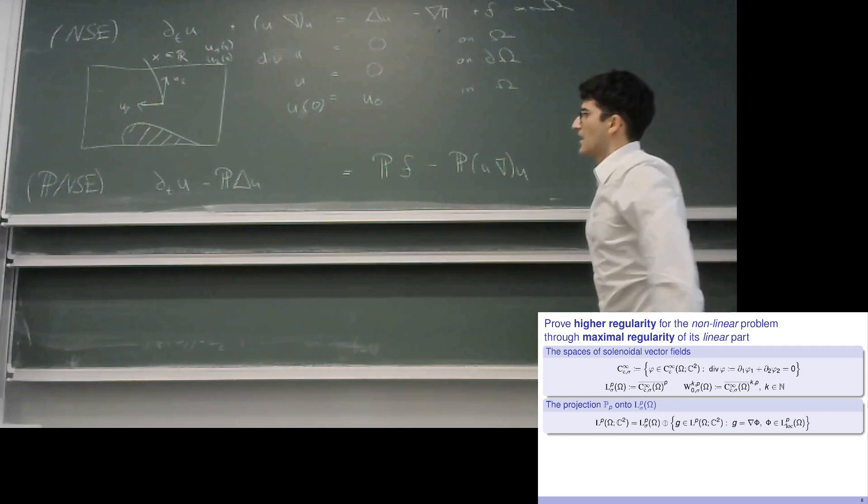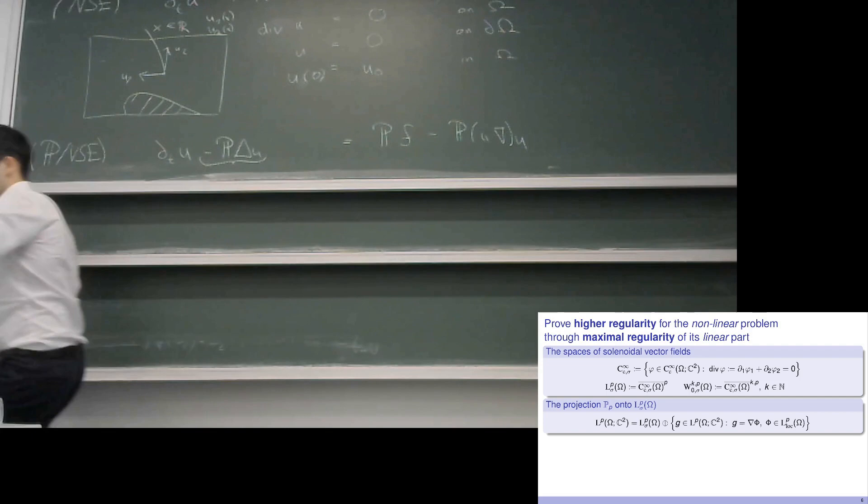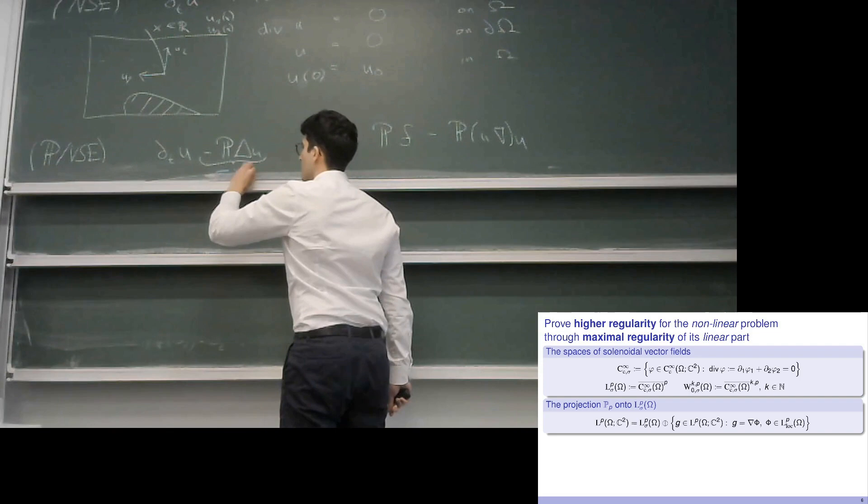Assuming this all makes sense, we have a nice linear operator that we will call A_p — the Stokes operator — defined on a suitable space.